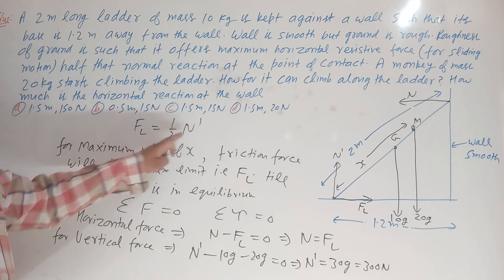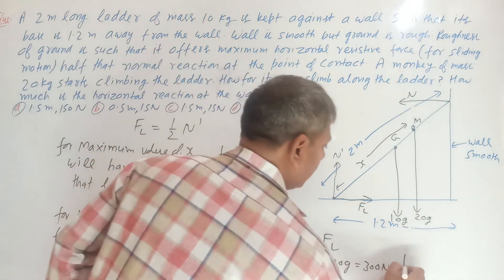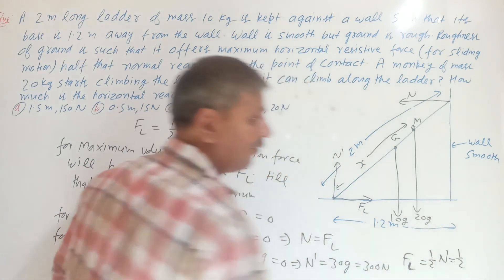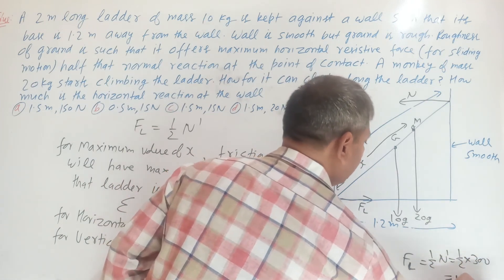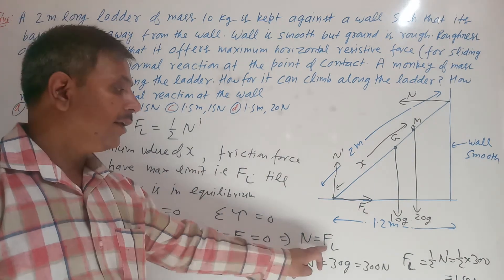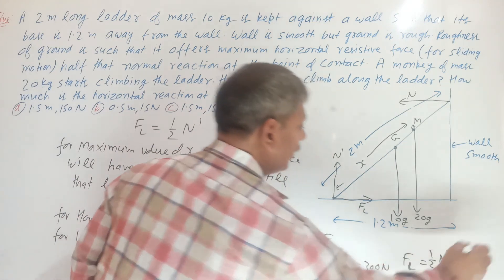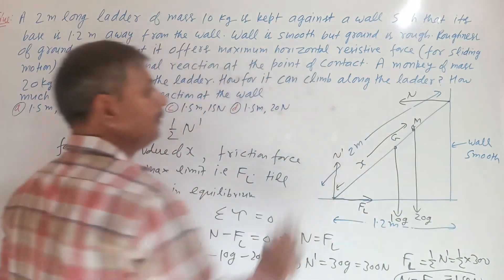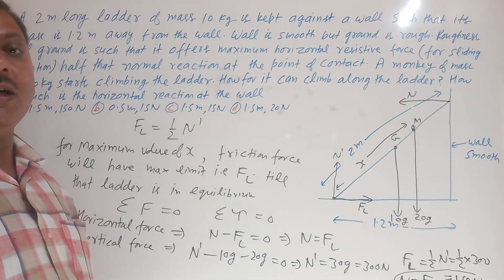So 300 Newton is the normal reaction at the base. The limiting friction FL equals half of N', which is half of 300, giving FL equal to 150 Newton. And from the equation N equals FL, we get N equals FL equals 150 Newton. So the horizontal normal reaction of the wall upon the ladder is 150 Newton.